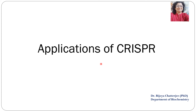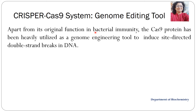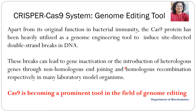Now let us look at the applications of CRISPR. Since the two leading scientists won the Nobel Prize for making this wonderful discovery of the CRISPR-Cas9 system as a genetic tool, we need to look at its various applications. First, it is seen as a genome editing tool. Apart from its original function in bacterial immunity, the Cas9 protein has been heavily utilized as a genome engineering tool to induce site-directed double-stranded breaks in DNA.